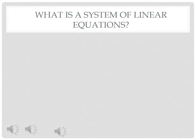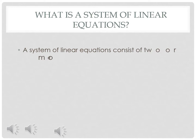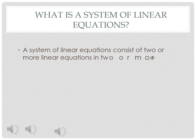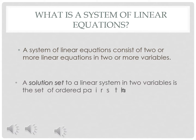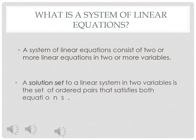What is a system of linear equations? A system of linear equations consists of two or more linear equations in two or more variables. A solution set to a linear system in two variables is the set of ordered pairs that satisfies both equations.